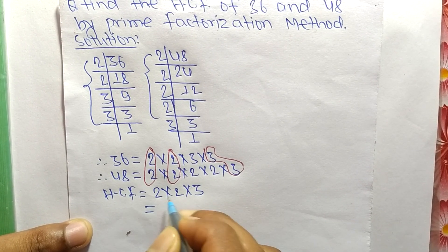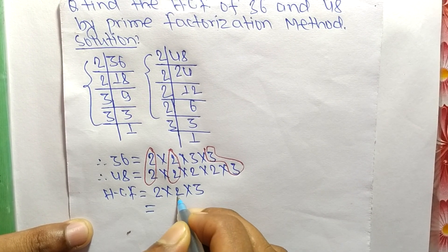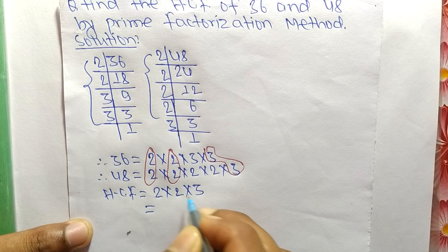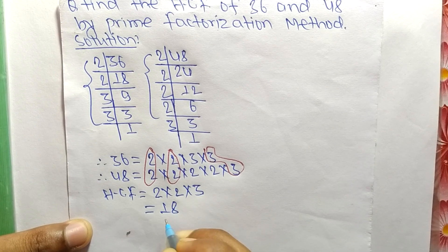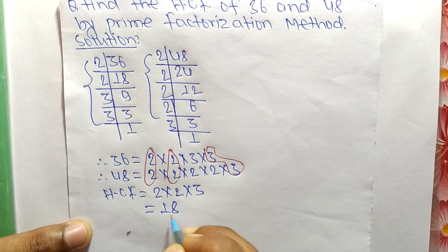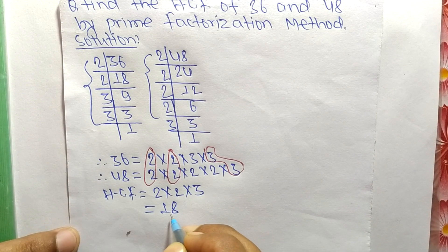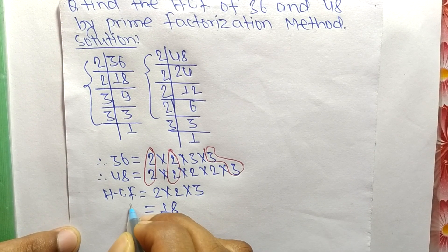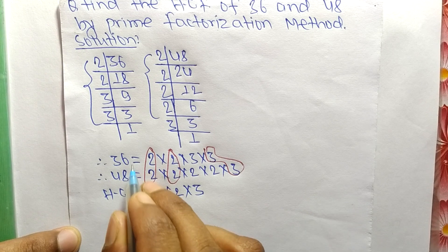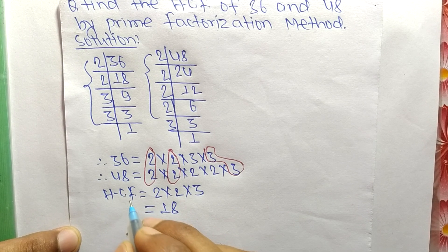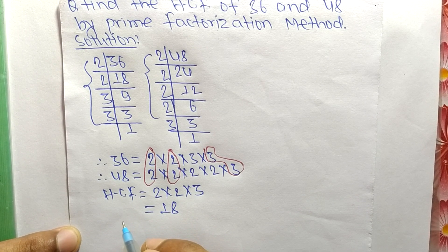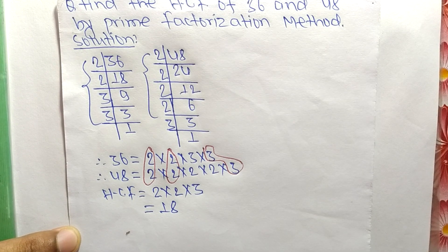So 2 times 3 means 6, and 6 times 3 means 18. So 18 is the HCF of 36 and 48. This much for today, thanks for watching.